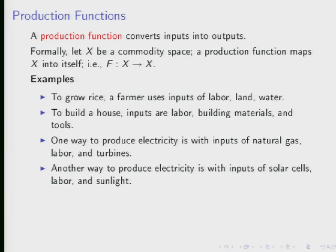Here are some examples. A farmer growing rice uses inputs of labor, land, and water. Building a house requires labor, building materials, and tools. Two different technologies can produce electricity: a natural gas plant uses natural gas, labor, and turbines; a solar approach uses solar cells, labor, and sunlight. Same output, quite different sets of inputs.